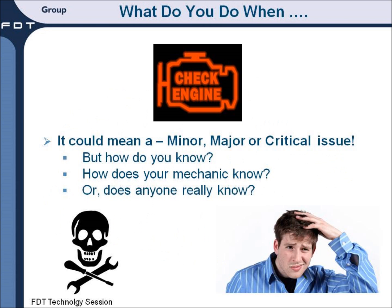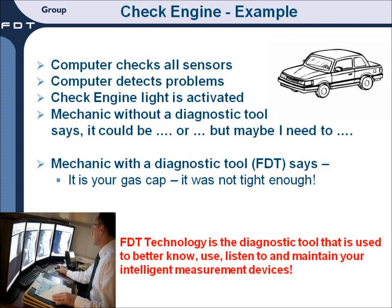Let's use the automobile as an example of a system that uses and monitors intelligent devices. When the check engine light comes on, you get a warning of a problem, but you really don't know the nature or the severity of that problem until it's analyzed. Let's look at the process used by the automobile as an example of how to determine the result or the impact of the check engine light.